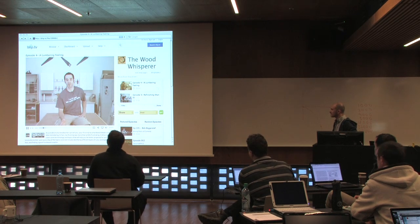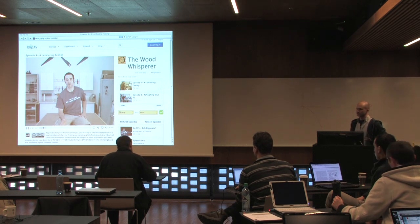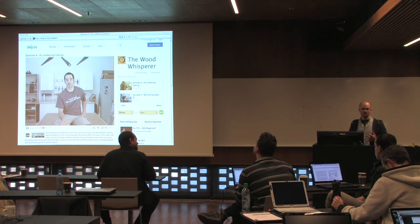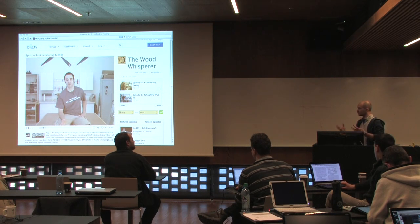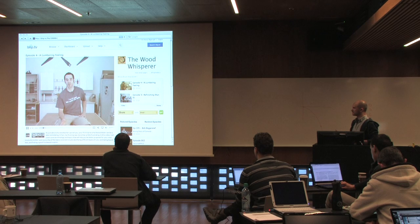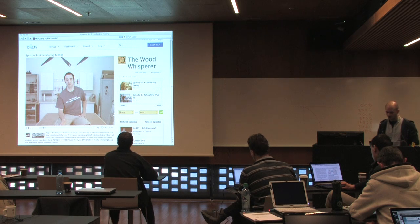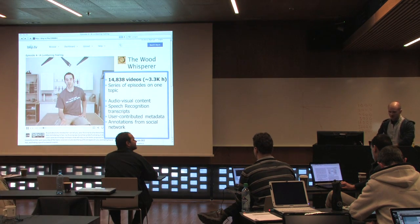We focused on the Blip TV platform, which is a platform for semi-professional user-generated content. The users who upload videos there show some basic proficiency in filmmaking — the videos have some kind of script and are a bit thought through, compared to YouTube which is more point-and-shoot. The main reason we chose Blip TV over YouTube is that Blip TV videos have a Creative Commons license, which is not available for YouTube videos, allowing us to provide a more open dataset.